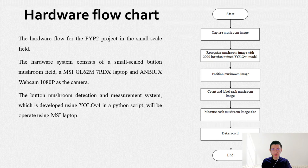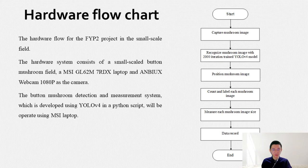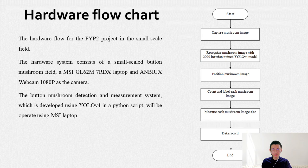This is the hardware flowchart for my FYP2 project in the small-scale field. The hardware system consists of a small-scale button mushroom field, an MSI GL62M laptop, and an Anabuse webcam 1080p as the camera. The button mushroom detection and measurement system developed using YOLO v4 in Python script will be operated using the MSI laptop.